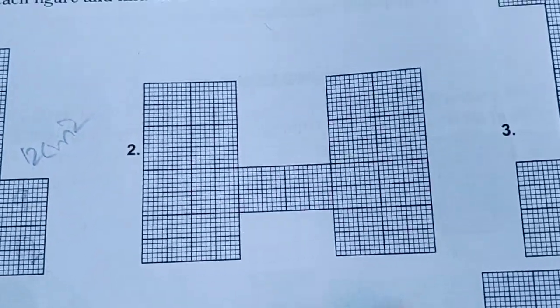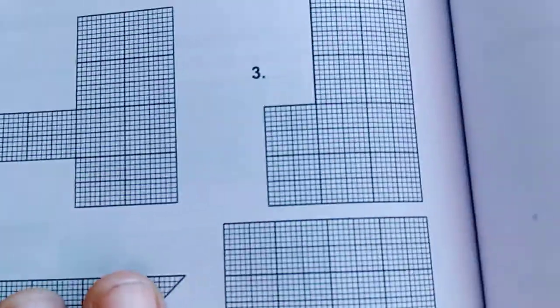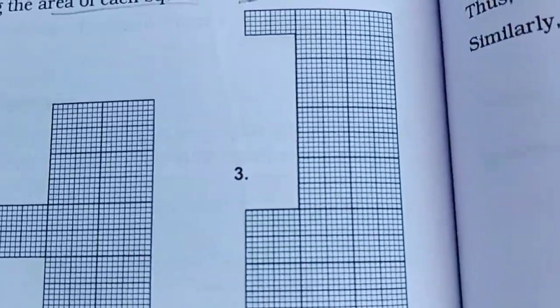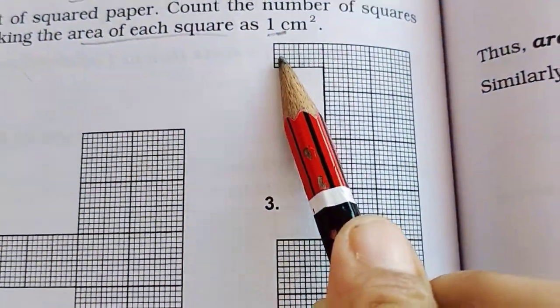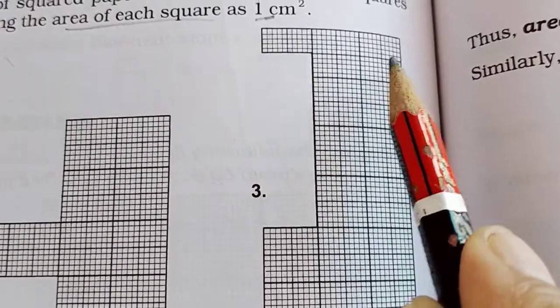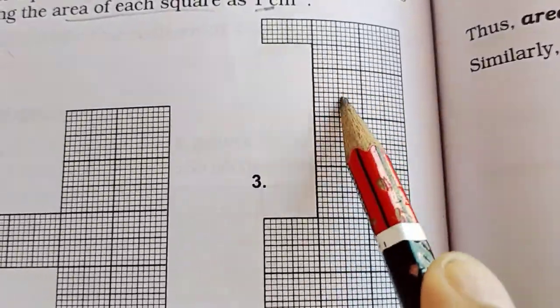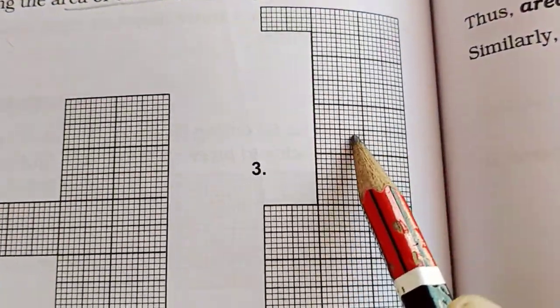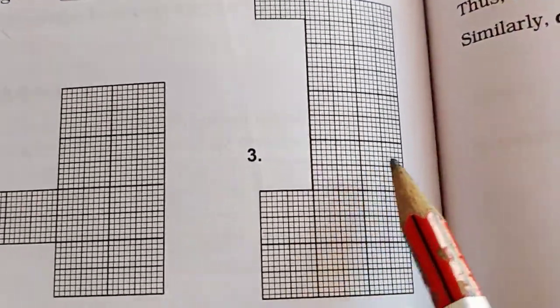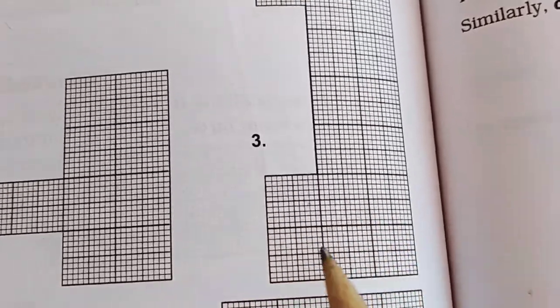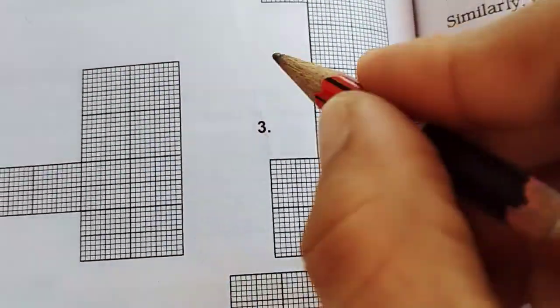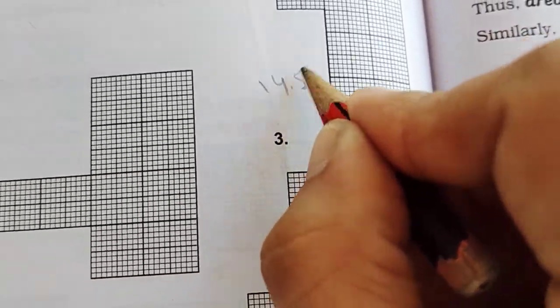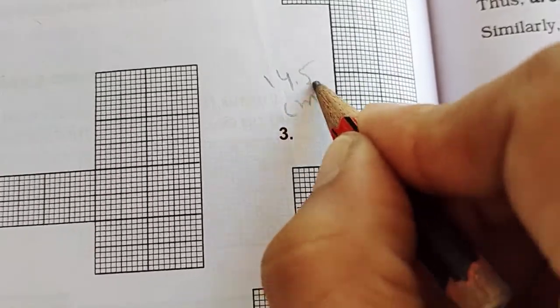In the same way, in this figure you have to count. This one is a half square, so first we count the remaining squares: 1, 2, 3, 4, 5, 6, 7, 8, 9, 10, 11, 12, 13, 14 and half. So the area of this figure is 14.5 centimeter square.